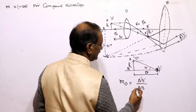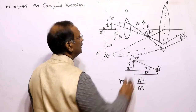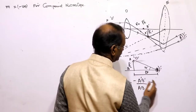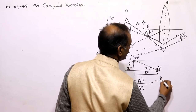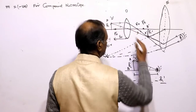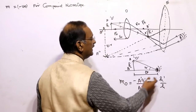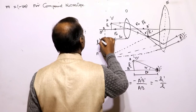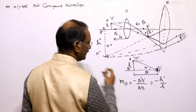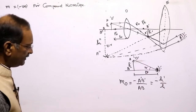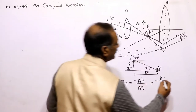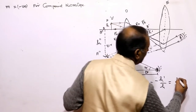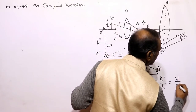Magnification of the objective equals image height divided by object height. Since the image is inverted, we write it as minus h-dash divided by h. In terms of distances, magnification of objective equals minus v-naught divided by u-naught, where the image length is the image distance v-naught (along ray direction, positive) and the object length is u-naught (against ray direction, negative as per sign convention).